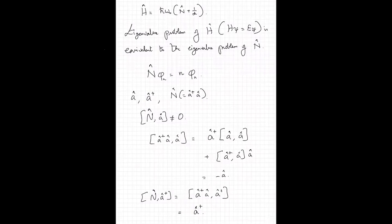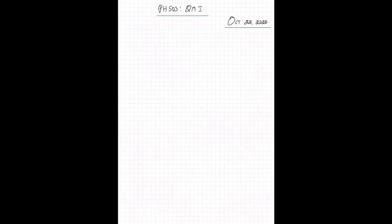Does anyone have any questions about what we've discussed so far? If there are no questions, we will proceed. We have to continue from this stage and figure out the eigenvalues and eigenfunctions of n, or equivalently the Hamiltonian. We still need to understand what a and a† do to the eigenfunctions of n. I want to understand how a and a† act on φₙ.